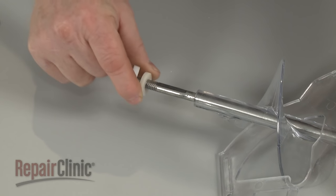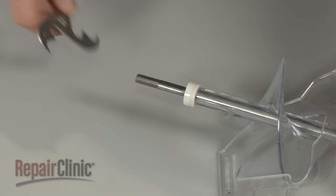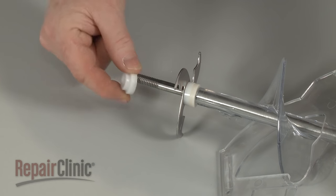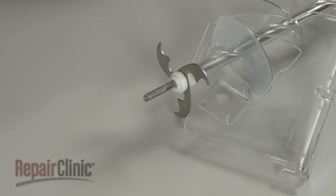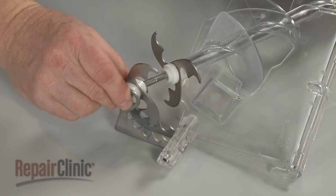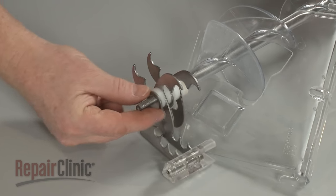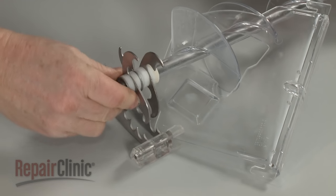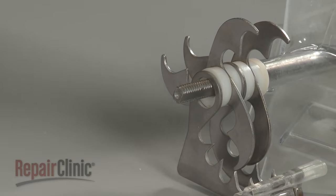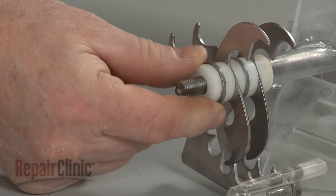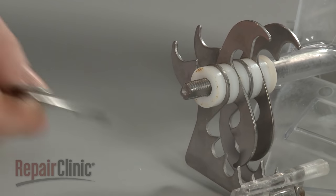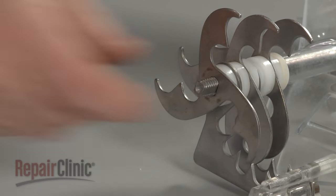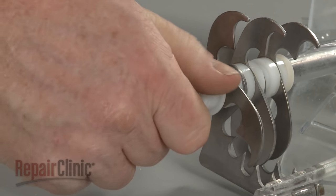Now align the blades and spacers in the correct order on the new auger. With the components in place, rethread the bearing retainer and tighten.